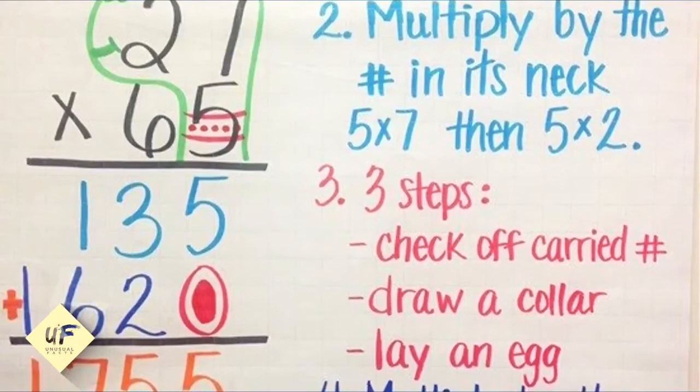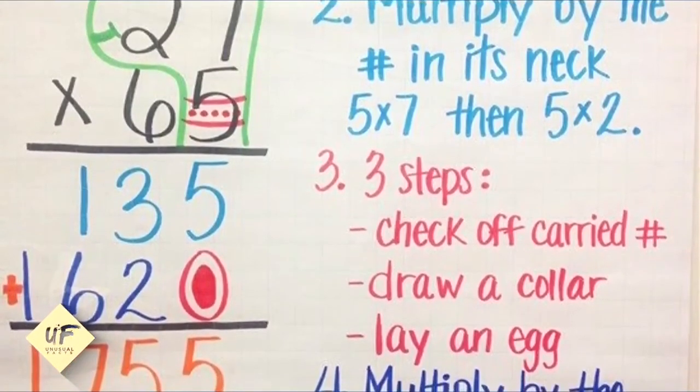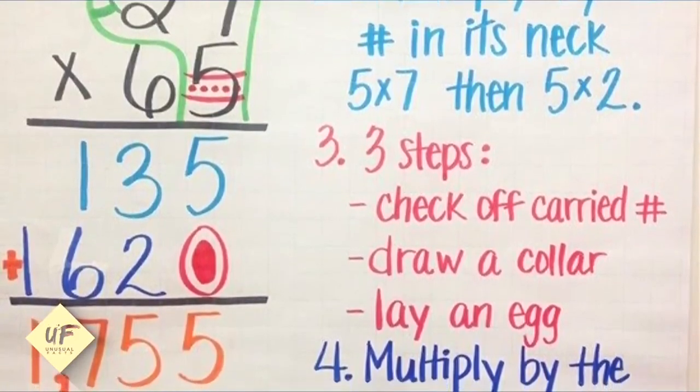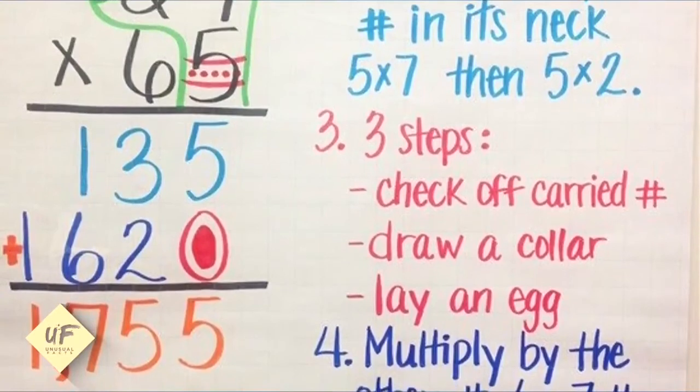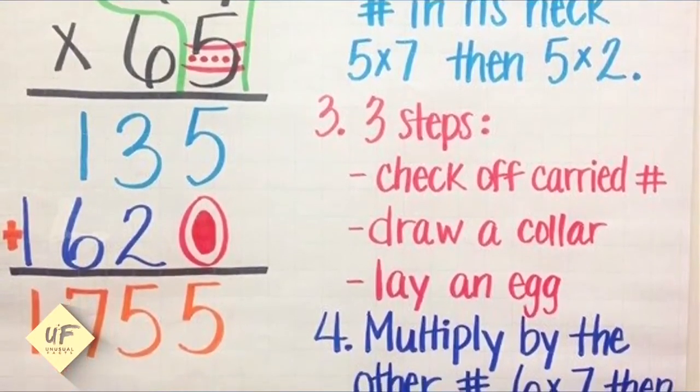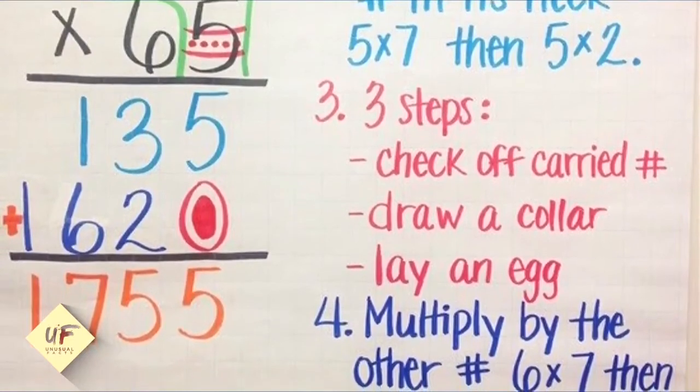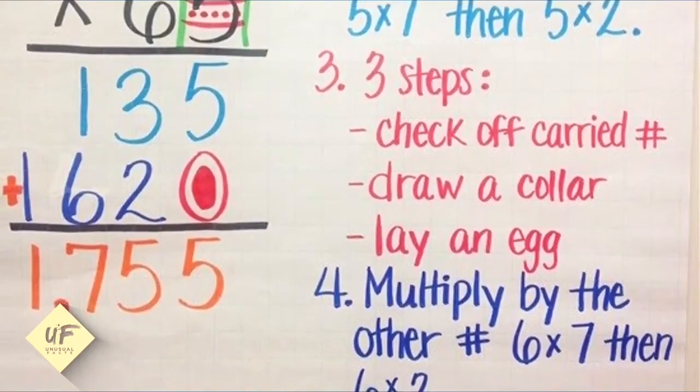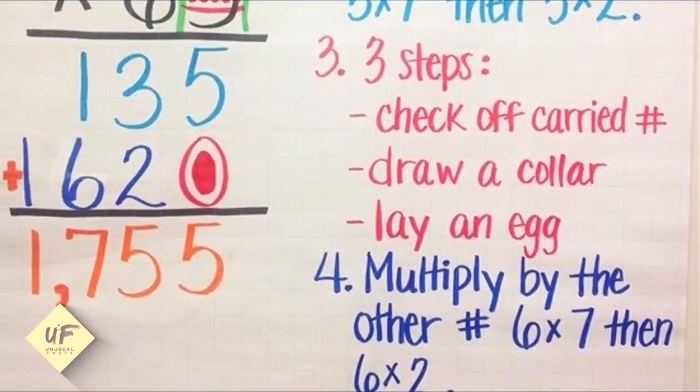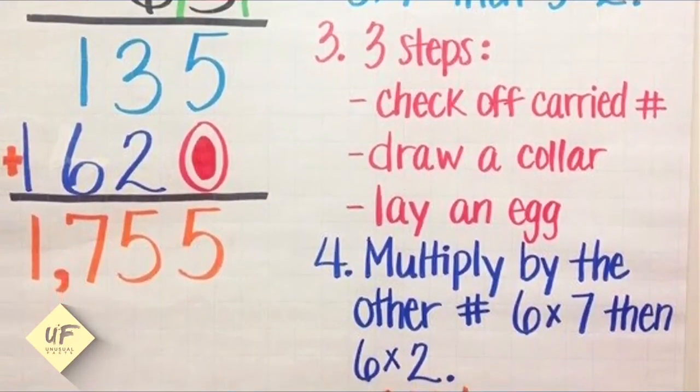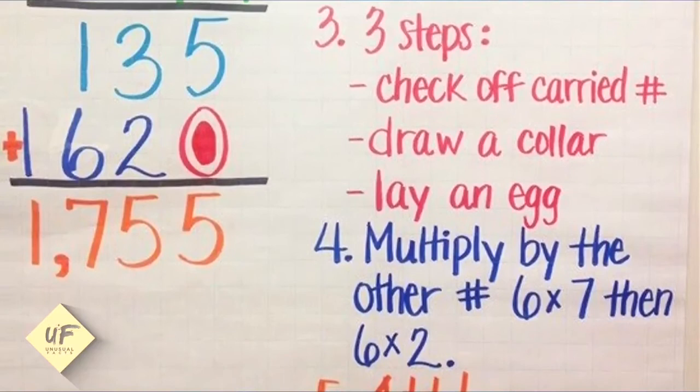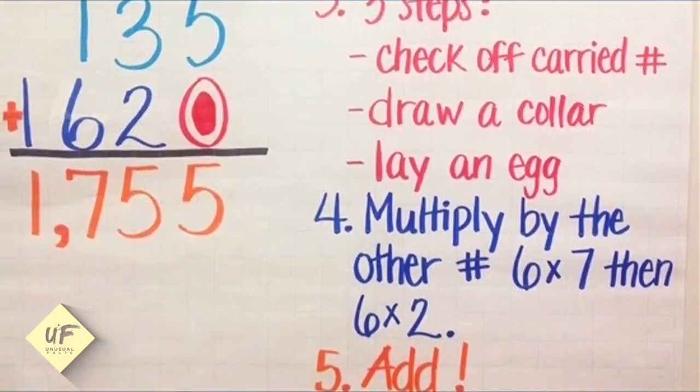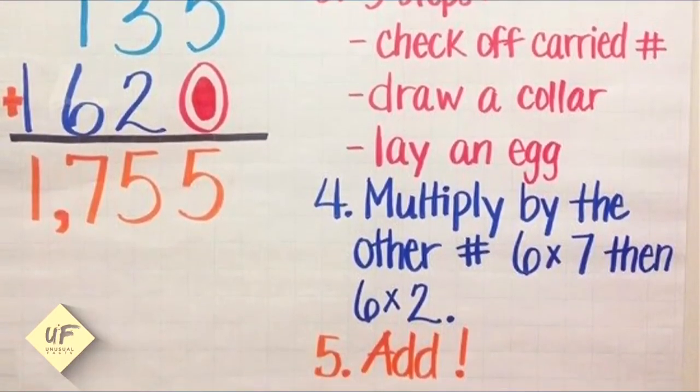You'll do that around the five, the seven, and the two, because those are the numbers you're going to multiply first. Step two: multiply the numbers in its neck—five times seven, then five times two. Step three has three parts: first, check off the carried number. Then you'll want to draw a collar on the five. Then this turtle's gonna lay an egg under that second five in the fourth row. Step four: multiply by the other number—six times seven, then six times two. Once you've done all of that, you simply add it up: 1,755.